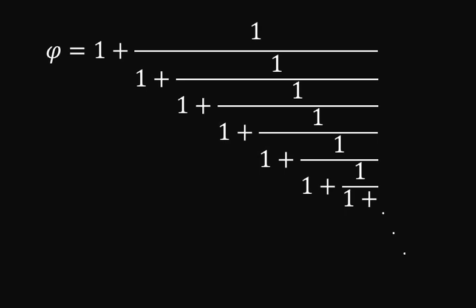We can keep doing this forever — that's what the dots mean. We can keep going, each time adding 1 plus 1 over the 1 before it. So we have another representation for phi, but this time we know what the dot-dot-dot means. In the decimal representation we had no idea what digits came next, but here we know exactly — each step just adds another 1 + 1 over. You keep going forever. So this is phi; this is another way to write phi, and we're going to use it to find an equation to solve for phi.